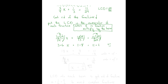This makes things much easier to deal with. Three times six is eighteen x, one times eight is eight, and eleven times one is eleven. So we have eighteen x plus eight equals eleven. Subtract eight from both sides to get eighteen x equals three. Divide both sides by eighteen — eighteen over eighteen is one, so we have x. Three over eighteen reduces to one-sixth. That's the final answer. We got it done without any fractions — great!